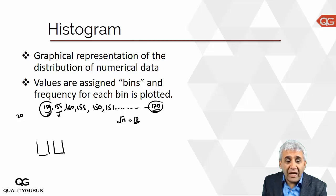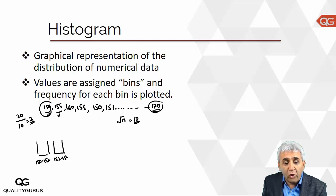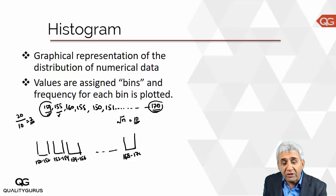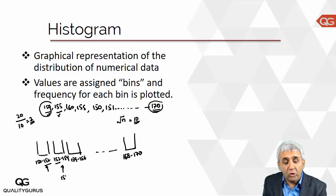If there are 100 students, the square root of 100 is 10, so we need 10 bins. The total range is 20, so 20 divided by 10 gives 2 — meaning each bin has a size of 2. So the first bin is 150 to 152, the second is 152 to 154, the third is 154 to 156, and so on, up to the last bin of 168 to 170. Note that 152 goes in the first bin and 152.1 goes in the second.